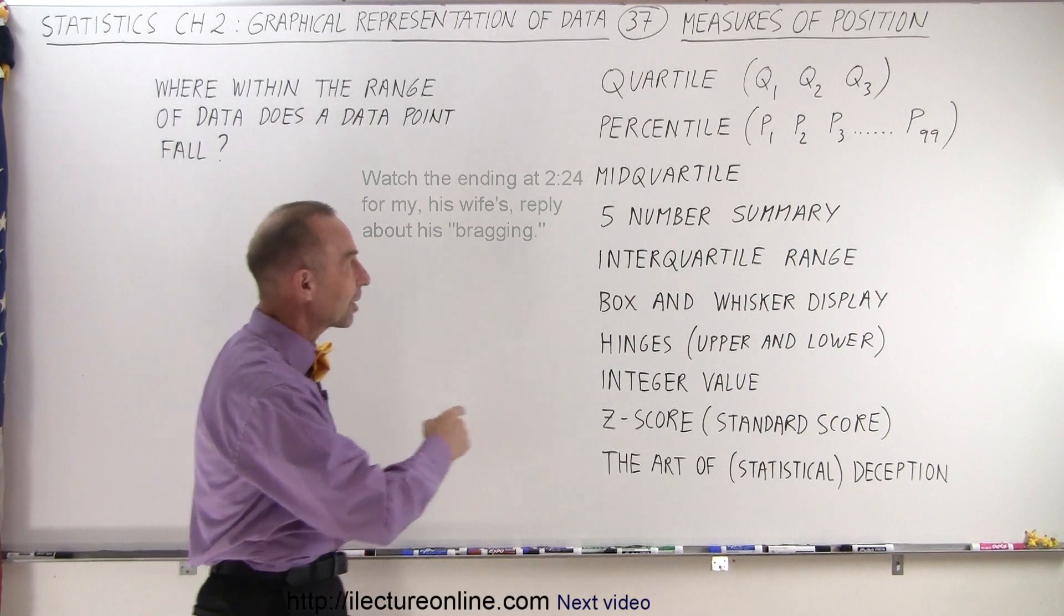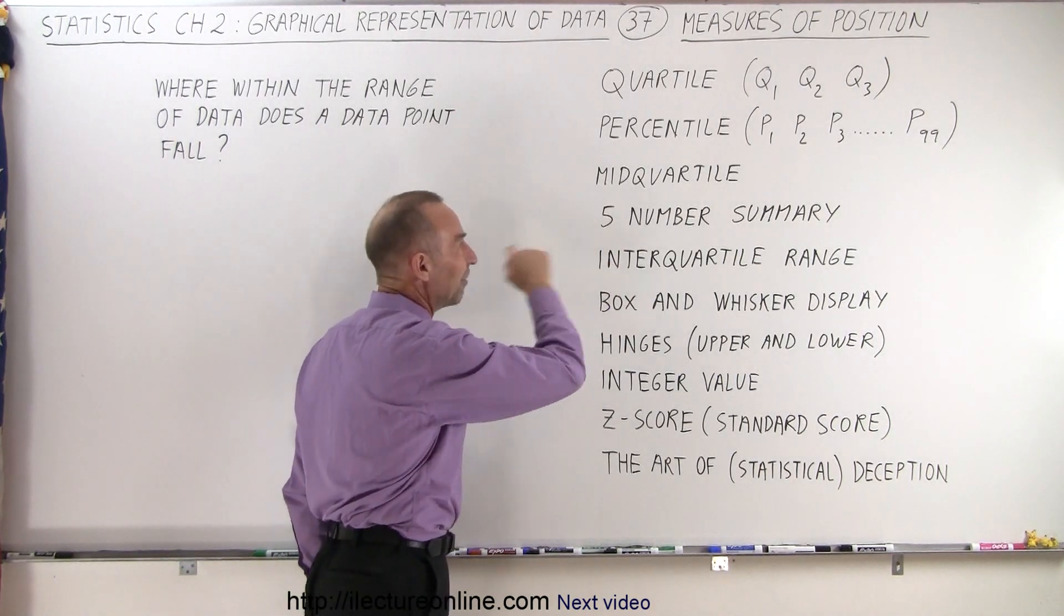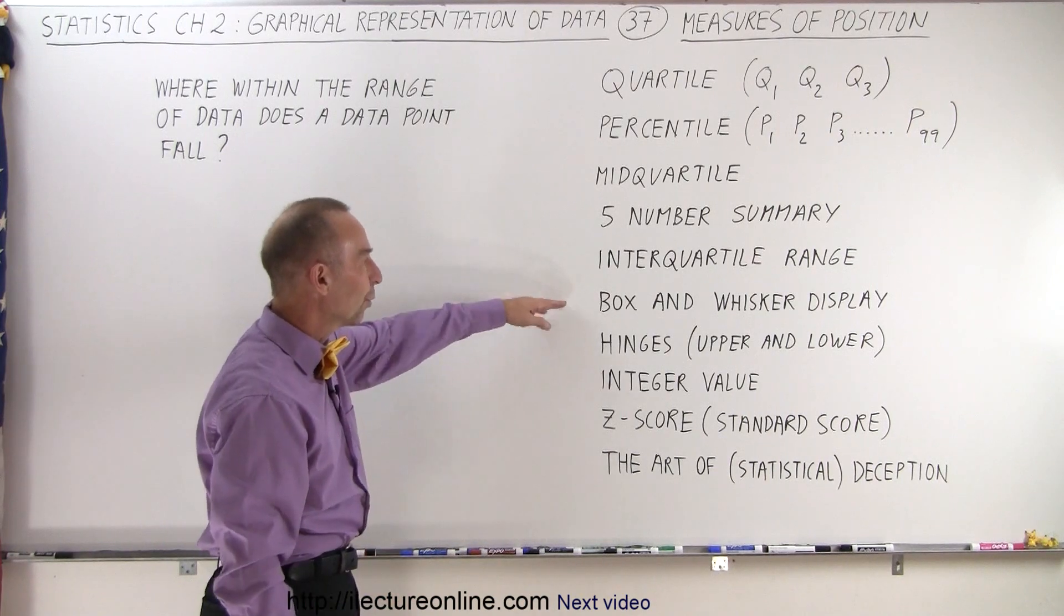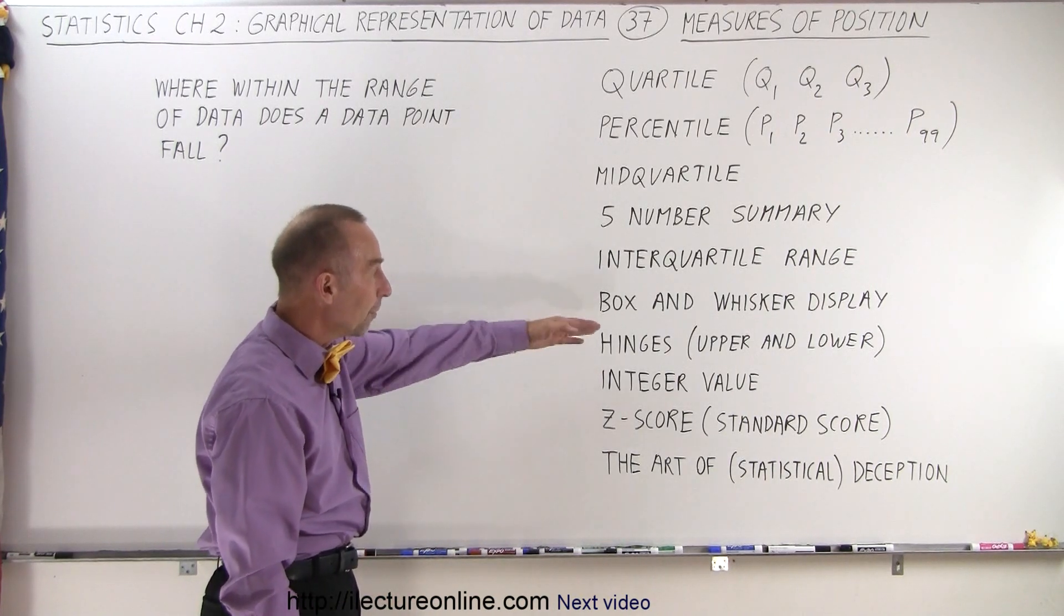Anyway, we also will talk about the mid-quartile, the five-number summary, the interquartile range, the box and whisker display, hinges - upper and lower hinges.